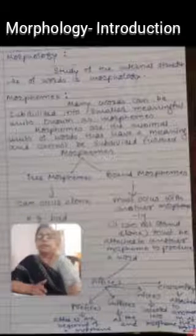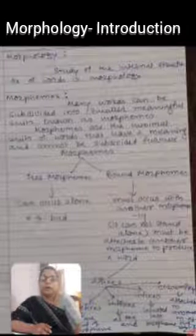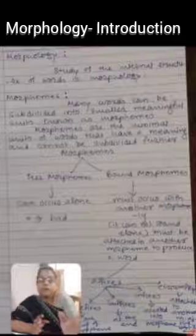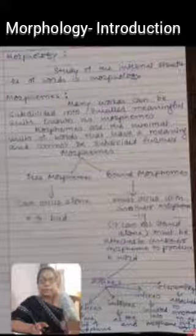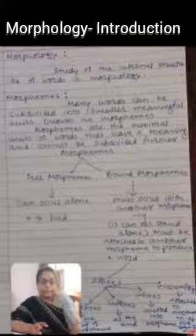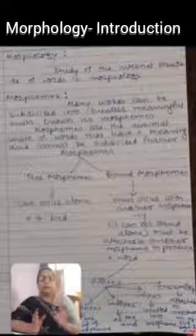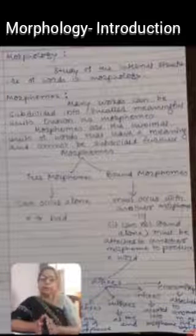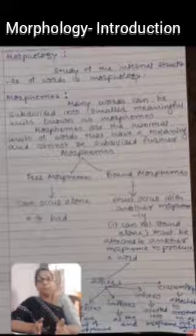Morphemes are of two types: free morphemes and bound morphemes. Free morphemes can be defined as the morphemes or units that can occur alone — that can stand independently as a word. For example, 'bad.' It is sufficient to use this word on its own. It has an independent identity, independent meaning. It can stand alone, independently, without the help of other units. So that is known as a free morpheme.